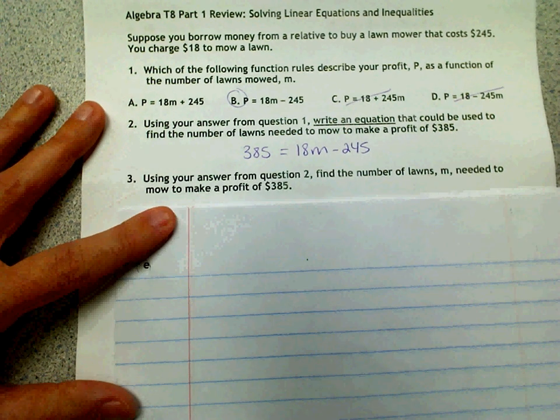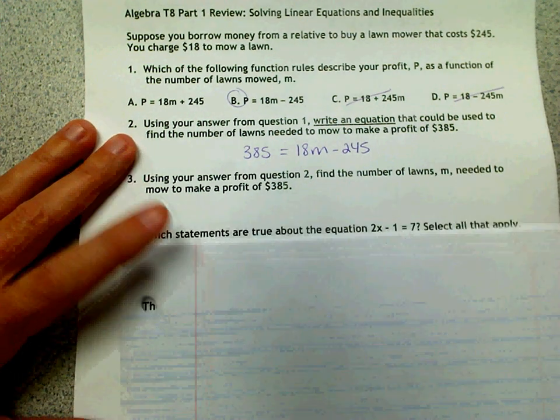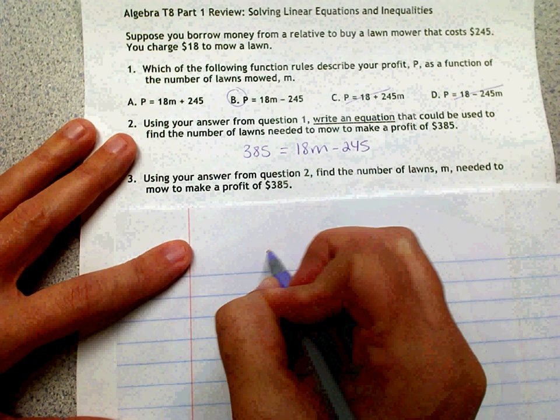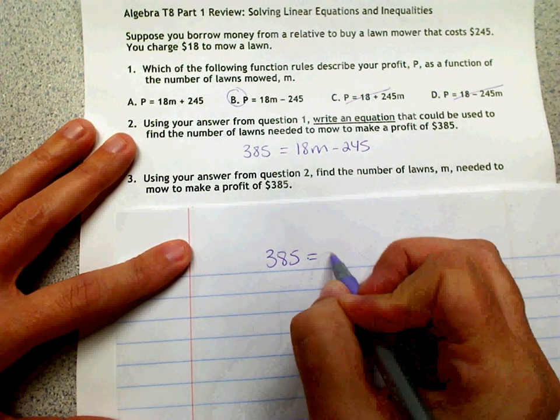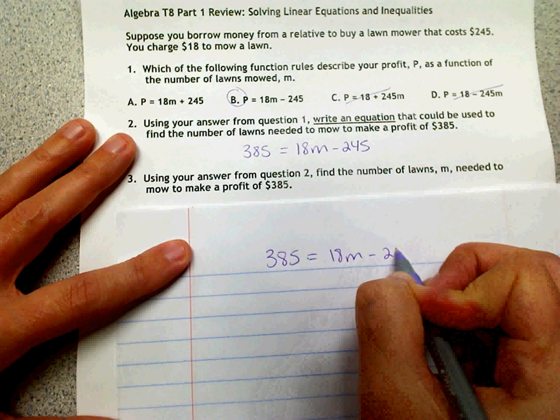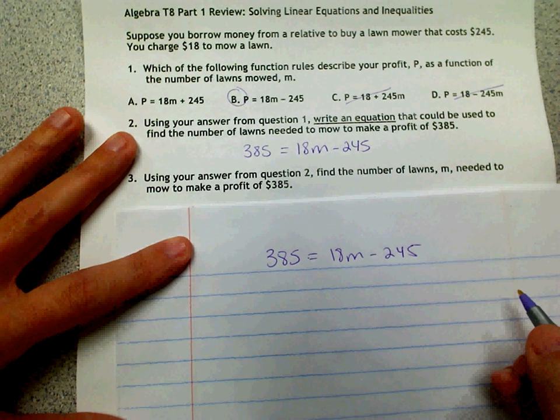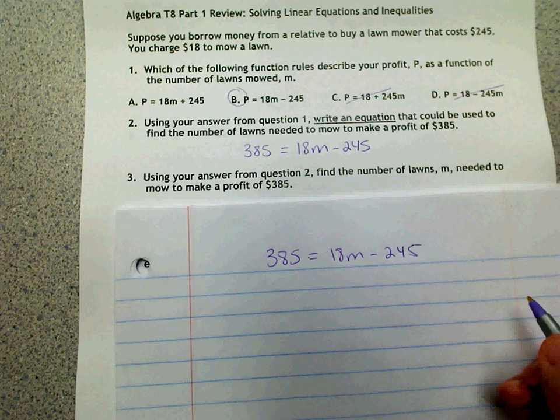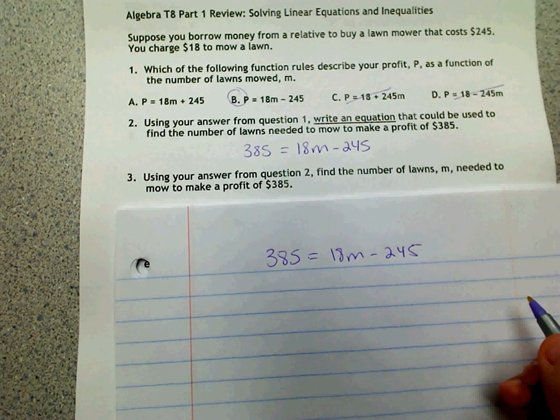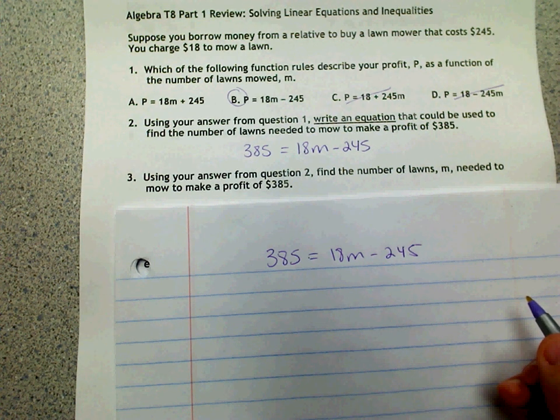All right, for part three then, we need to solve that equation. Okay, so we've got $385 equals 18M minus $245. So the first thing we want to do is add, we want to get M by itself. So we want to add $245 to both sides.